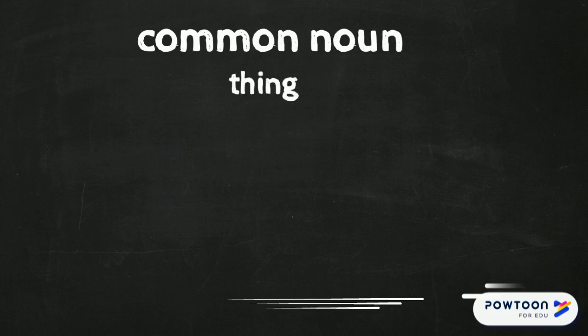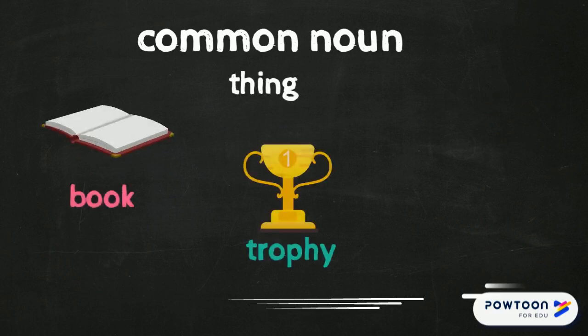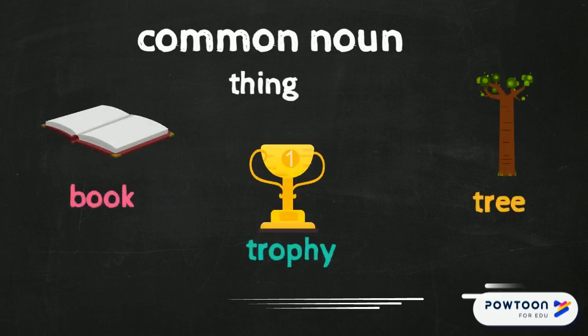One more round. Here we have a book, a trophy, and a tree. These are general, common names, so they are common nouns with lowercase letters.